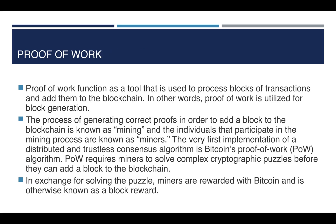Proof of work is a system used to process blocks of transactions and add them to the blockchain. Mining is the process of generating correct proofs in order to add a block to the blockchain, and individuals who participate in this process are known as miners. Proof of work was first used by the Bitcoin blockchain system. It requires miners to solve complex cryptographic puzzles before they can add a block. In exchange for solving a puzzle, the miner is rewarded with Bitcoin.